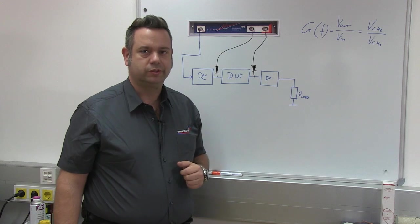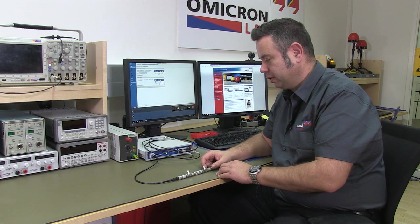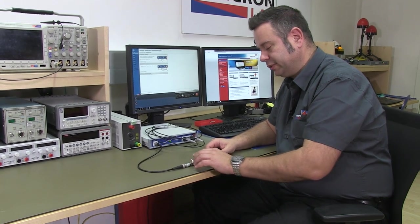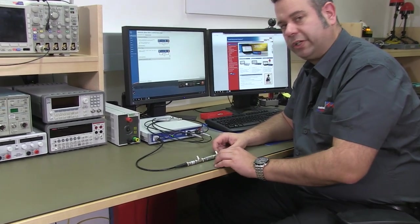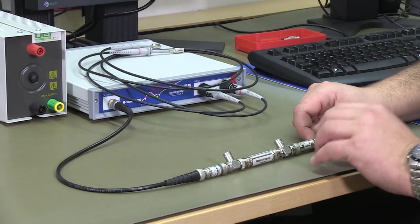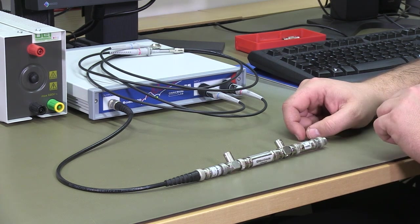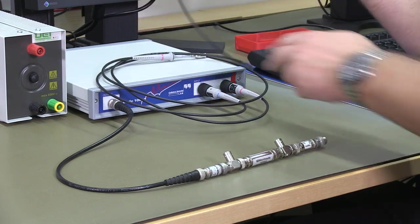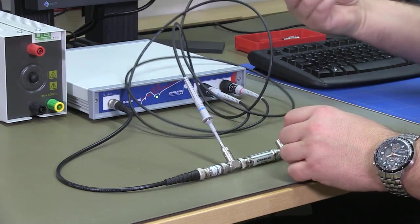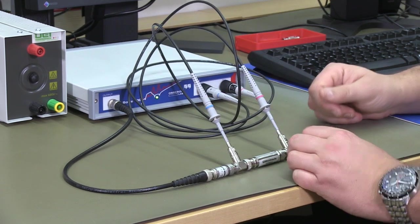Let's have a look at the Bode 100 and how to do this. To measure the voltage transfer function I have slightly modified the measurement setup. The output signal of the Bode 100 is now connected to an attenuator. After the attenuator there is a T-junction which allows me to pick up the input voltage of the high pass filter. After the filter there is another T-junction where I can pick up the output voltage of the filter, then another attenuator and the termination. The blue probe connected to channel 1 picks up the input voltage of our filter, and the pink probe connected to channel 2 picks up the output voltage of our high pass filter.